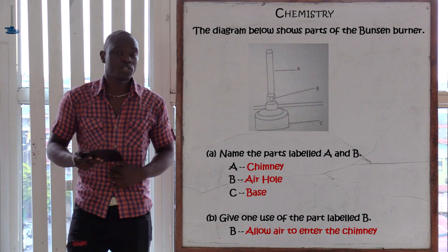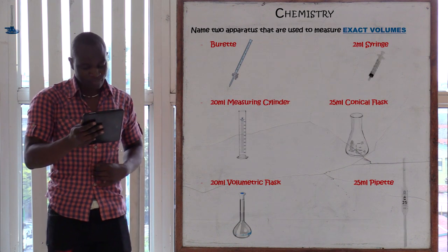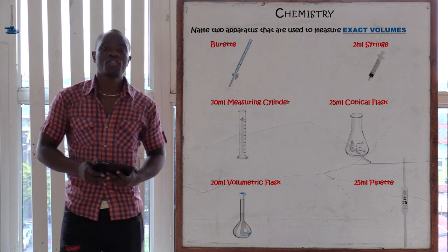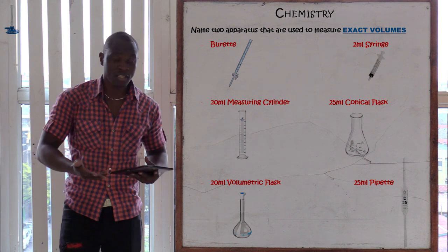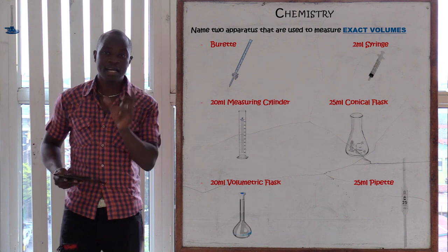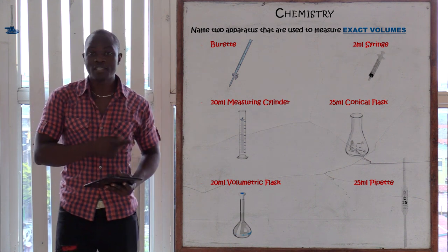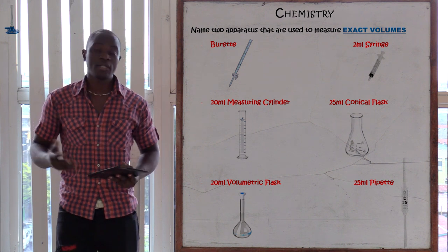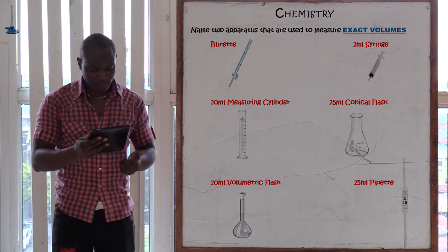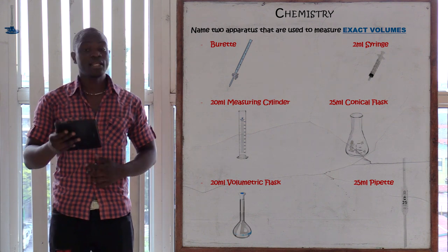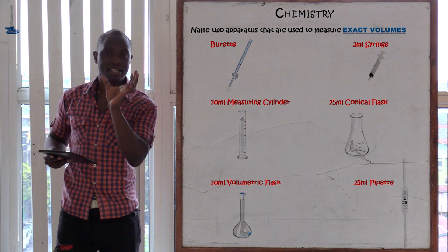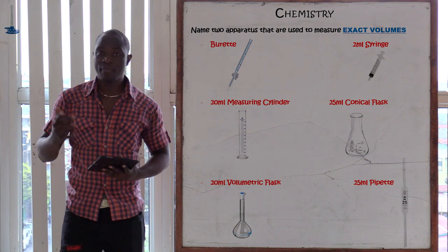Now let's go to question number two. It's asking: name two apparatus that are used to measure exact volumes. This question is simple but also very tricky. The question is asking for apparatus used to measure exact volume — the word 'exact volume' is the key term here.